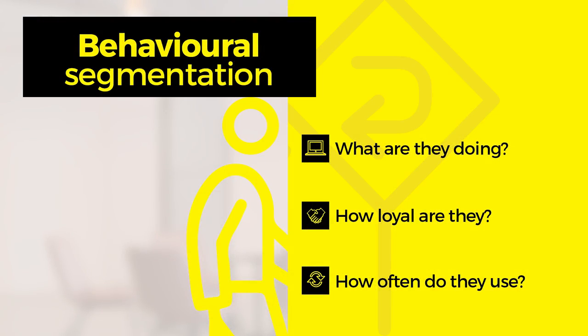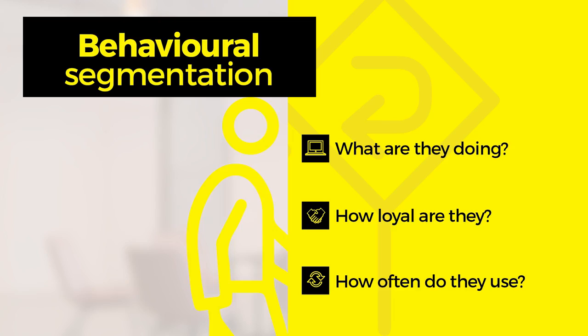Behavioral segmentation is much better because it focuses on what people are actually doing. In this type of segmentation, brands look at user status — how loyal they are, for example, whether they buy the brand at all — or occasions of usage, such as whether it's the morning, the afternoon, or while commuting, or the benefits sought, such as whether we need nutrition or convenience.